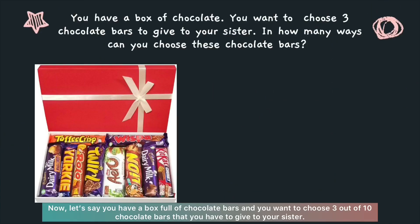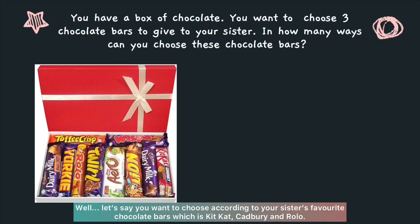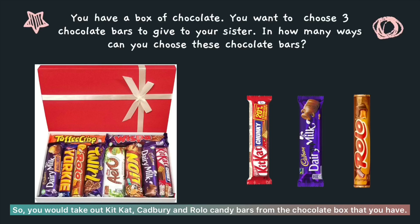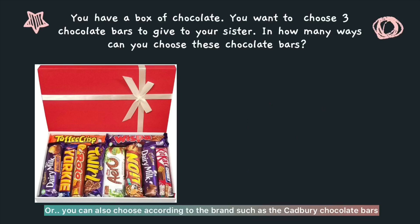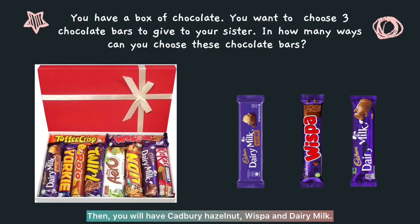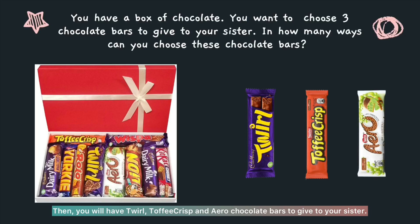Let's say you have a box full of chocolate bars and you want to choose 3 out of 10 chocolate bars to give to your sister. In how many ways can you choose these chocolate bars? You could choose according to your sister's favourite chocolate bars: Kit Kat, Cadbury and Rollo. Or you can choose by brand, such as Cadbury Hazelnut, Cadbury Whisper and Cadbury Dairy Milk. Or you can also choose the chocolate bars randomly — for example, Twirl, Toffee Crepes and Aero.